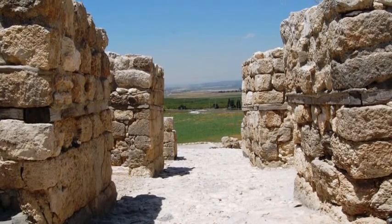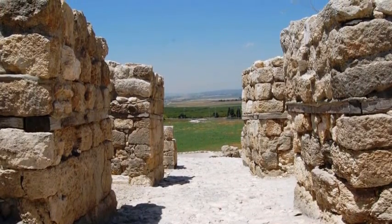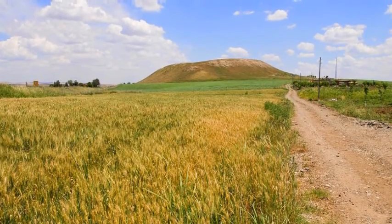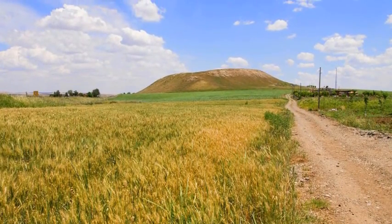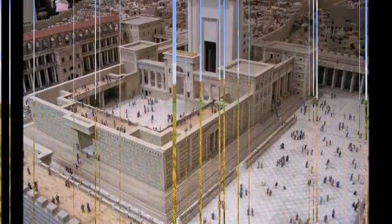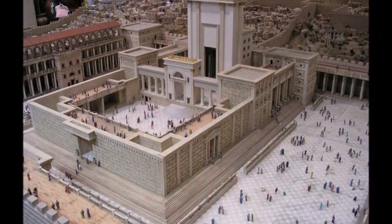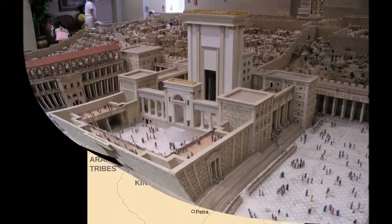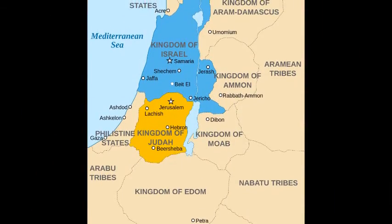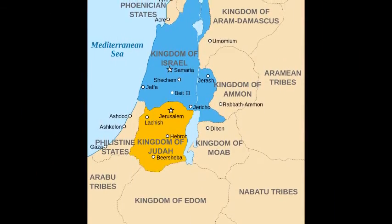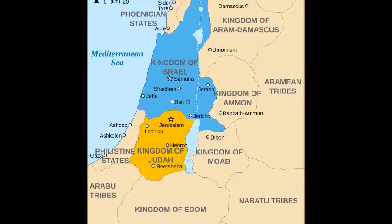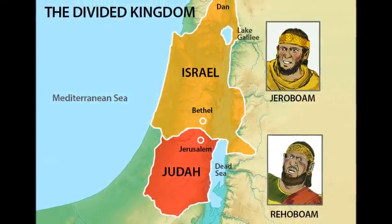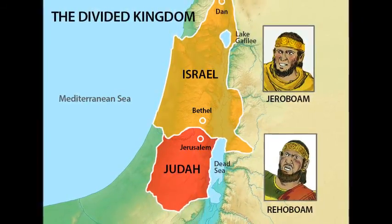First Kings covers a period of about 125 years, beginning with the death of King David and followed by the reign of his son Solomon, who built Israel's first temple. After Solomon's death, civil war tore the nation apart. The nation was divided into two kingdoms — one in the north called Israel and one in the south called Judah. First Kings records the actions of all the kings in both the north and the south.